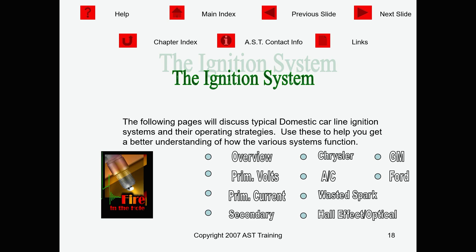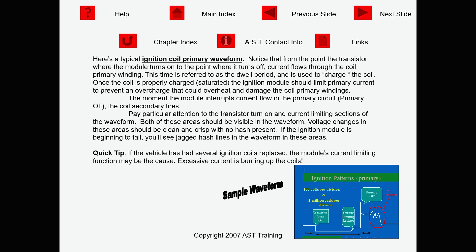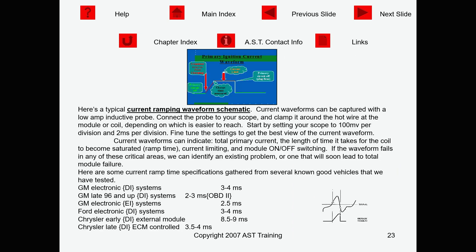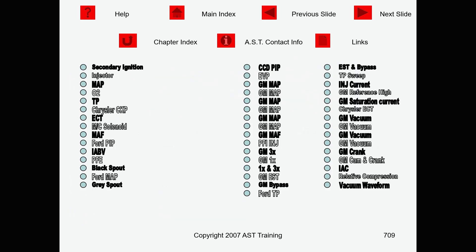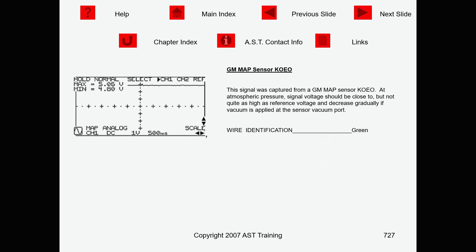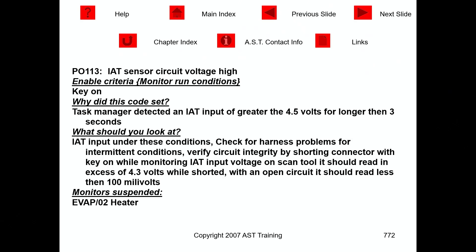Let's say I clicked on ignition systems — everything was hyperlinked together. I could get primary voltage, it would tell you how the system is supposed to work, show you different parts of the patterns. If I wanted to go to the waveform library, I could go there, pick a particular sensor, it would tell you which wire to plug into, and all of them were known good patterns. Whether it was a trouble code, I could go into the trouble code menu — it would list out the trouble code, what it meant, why the computer set that code, what the enable criteria was, if any monitors were shut down from setting that particular trouble code.